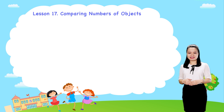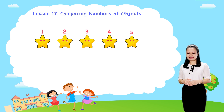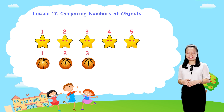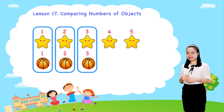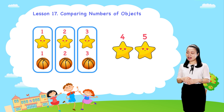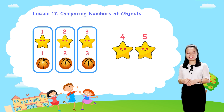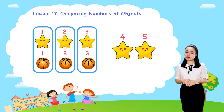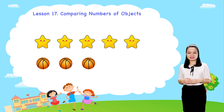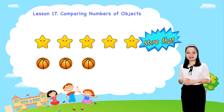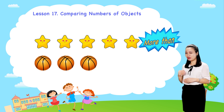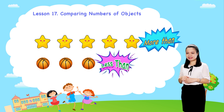Look, we have five stars and three balls. If we pair a star with a ball, then two stars are unpaired. Because there are more stars than balls. Or, there are fewer balls than stars. So, we say the number of stars is more than the number of balls. Or, the number of balls is less than the number of stars.